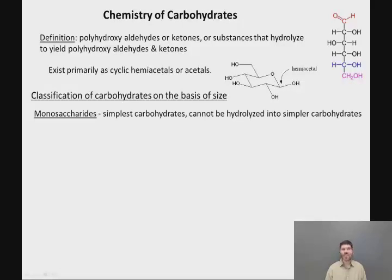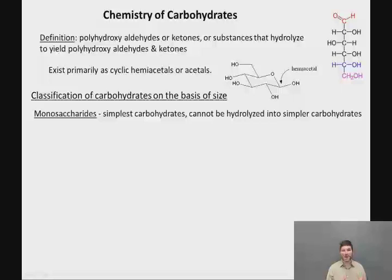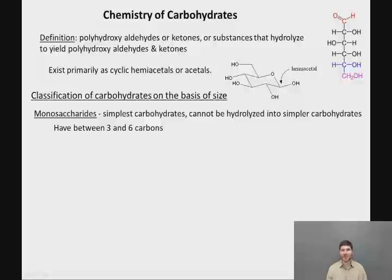There are a number of ways to classify carbohydrates. One classification scheme is roughly on the basis of size. The smallest carbohydrates are called monosaccharides — the simplest carbohydrates, which cannot be hydrolyzed into anything smaller. There is not a specific number of carbons required to be a monosaccharide, but they generally have between three and six carbons.